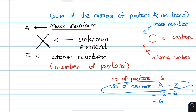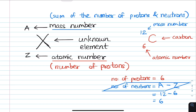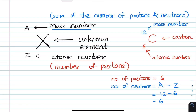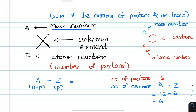Let's take a look at this formula. The mass number is the sum of neutrons and protons. The proton number is related to the neutron count.